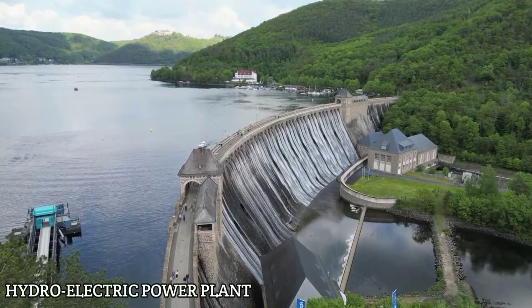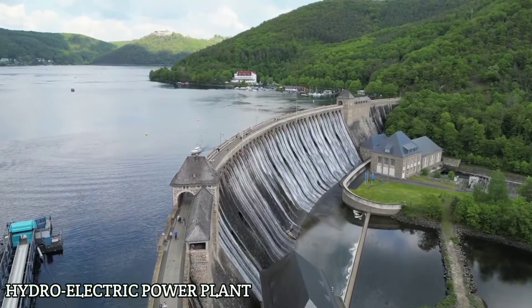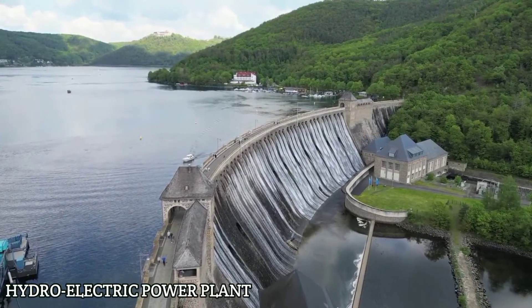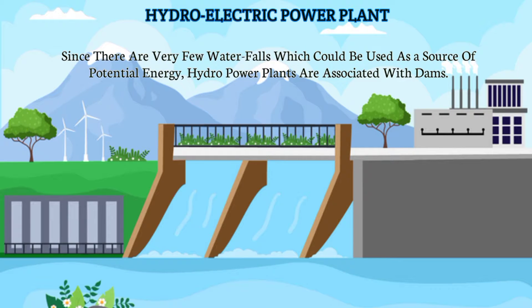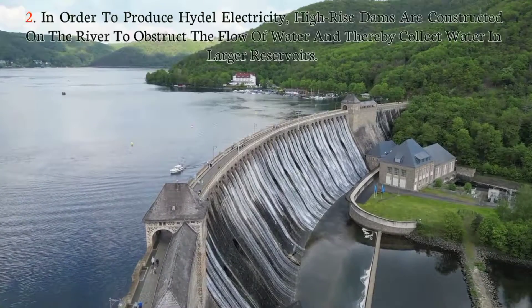Hello everyone, welcome back to our channel. Today we will discuss about Hydroelectric Power Plants. Hydro power plants convert the potential energy of falling water into electricity. Since there are very few waterfalls which could be used as a source of potential energy, hydro power plants are associated with dams.